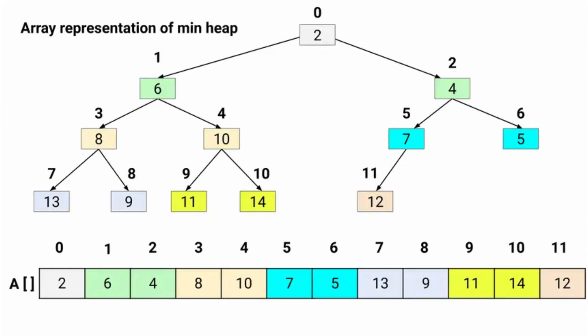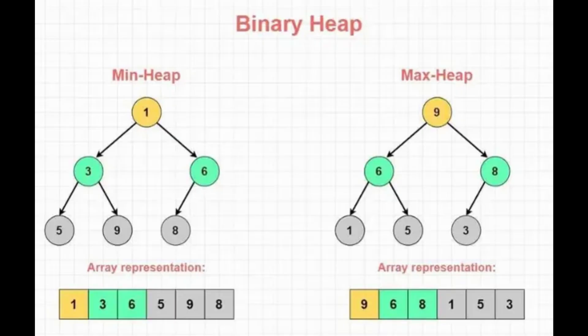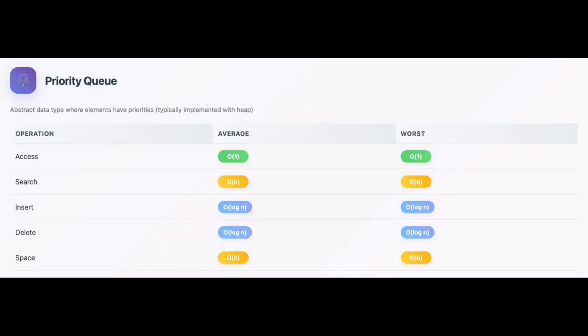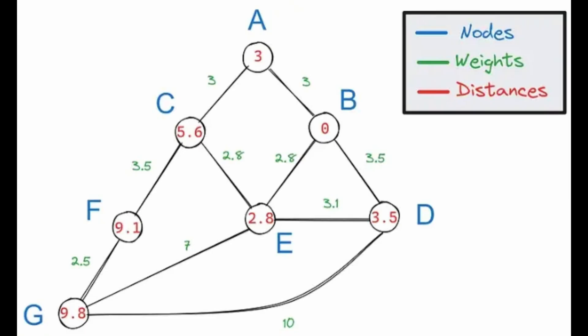Next, we have the heap, or priority queue. Think of a pile of blocks where the most important one — biggest or smallest — is always on top. They are often called priority queues because the item on top is always the most important. Heaps are actually a special kind of tree shape. Getting the top item is fast: O(1). But getting any other item is slow: O(N). When you add or remove a block, others might move up or down to keep the most important one on top — this is usually O(log N), which is very good. Heaps are used in an algorithm called Dijkstra's.